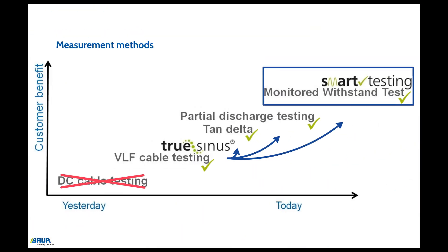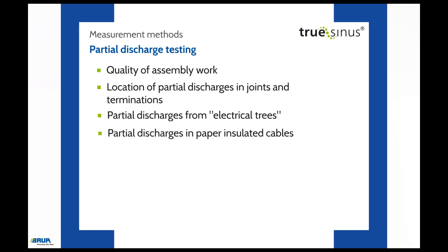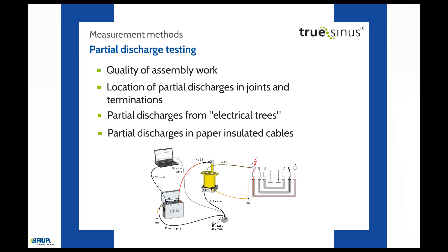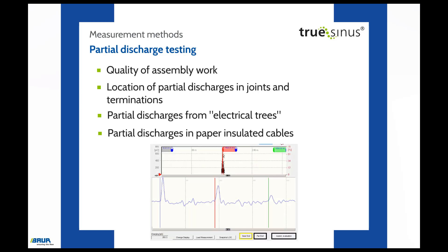The partial discharge testing provides information about the quality of fitting work and locates partial discharges in joints, cable terminations, electrical trees in XLPE cables, and PDs in paper-insulated cables. The following equipment is required: a VLF voltage source, an appropriate coupling capacitor, and a PC to control the complete process. With this combination of measuring devices, the information can be found and the measurement results supplied.